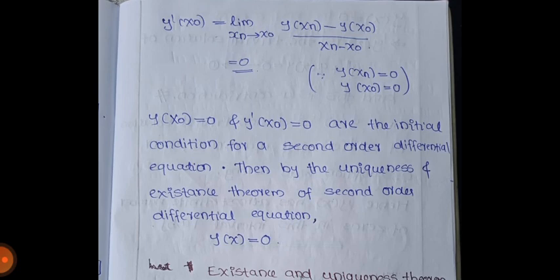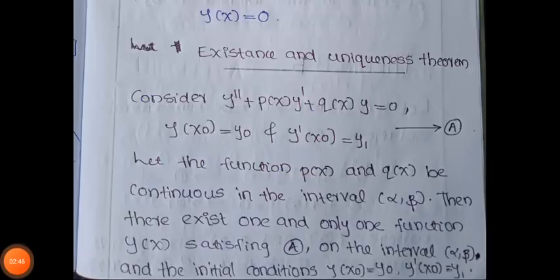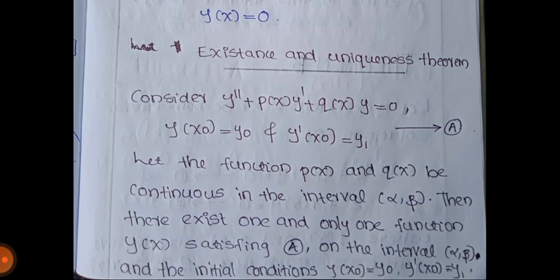So y(x_0) = 0 and y'(x_0) = 0 are the initial conditions for a second order differential equation. By the existence and uniqueness theorem for second order differential equations: consider y'' + p(x)y' + q(x)y = 0 with y(x_0) = y_0 and y'(x_0) = y_1. If p(x) and q(x) are continuous on (α, β), then there exists one and only one solution y(x) satisfying the equation and initial conditions.